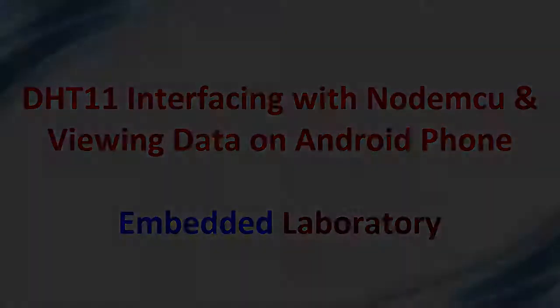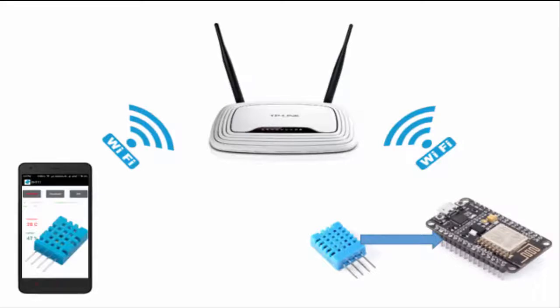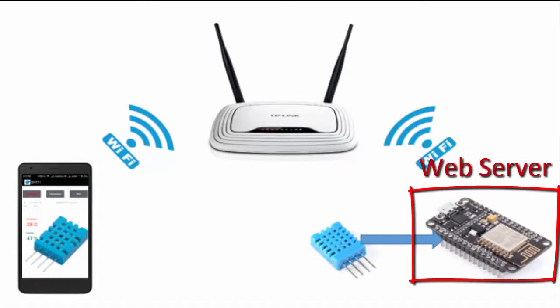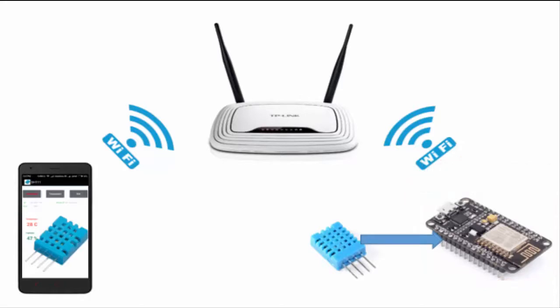Hello guys, welcome back. In this video I will show you how to use the DST11 temperature and humidity sensor with the NodeMCU module and get the measured data directly on an Android smartphone. In this project, NodeMCU is configured as a web server which measures the temperature and humidity values from the DST11 sensor.